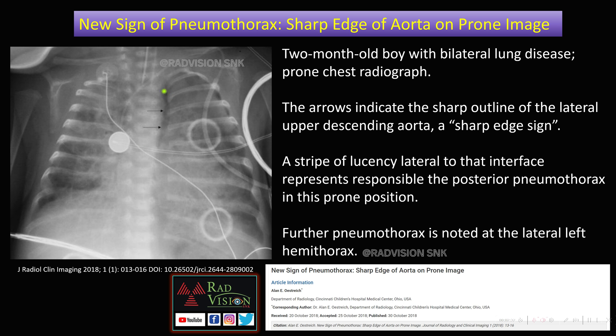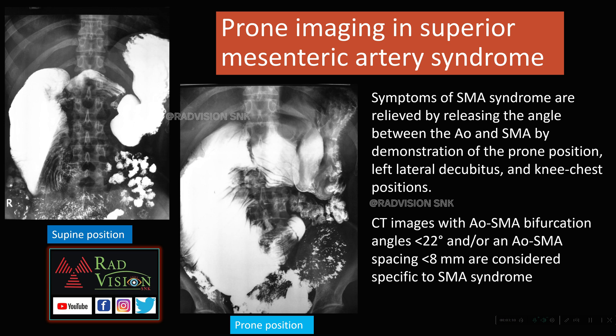Next is a new sign for pneumothorax — the sharp edge sign on prone images. This baby presented with chest pain and bilateral opacities. There is a clear sharp lucency on the lateral surface of the upper descending aorta and between the lung, and pneumothorax is noted along the left lateral hemithorax. This strip of lucency is called the sharp edge of the aorta. In newborns and infants where supine imaging is not possible, the sharp edge of the aorta on prone images is a classical sign for pneumothorax.